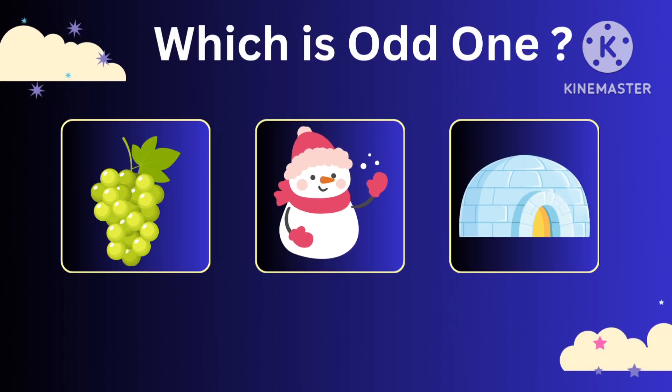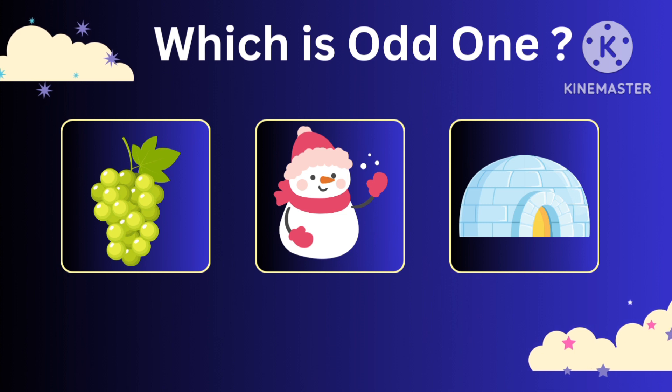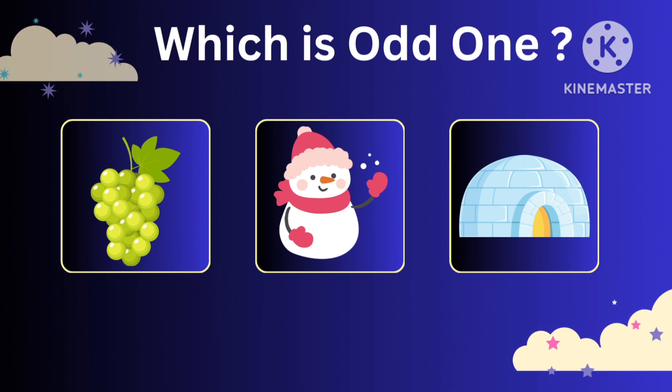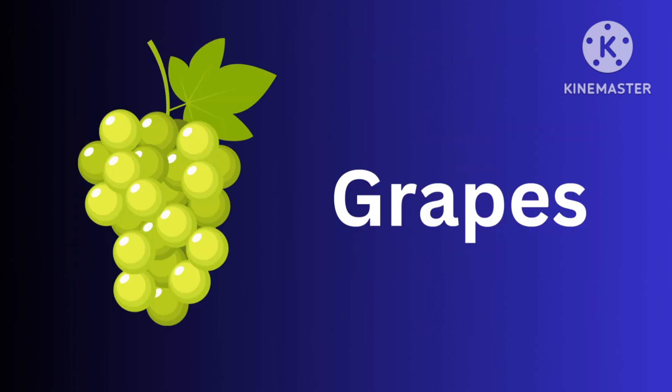Which is the odd one here? Grapes, Snowman, Igloo. Grapes.